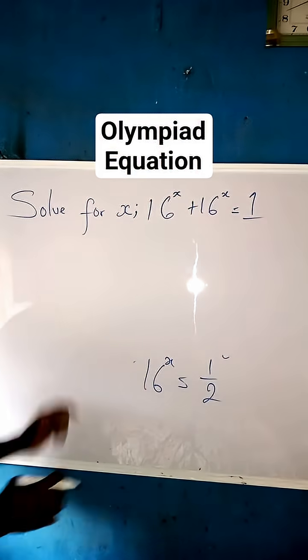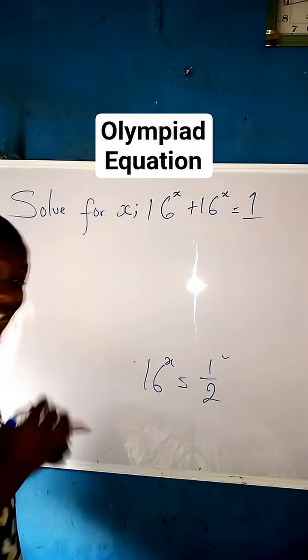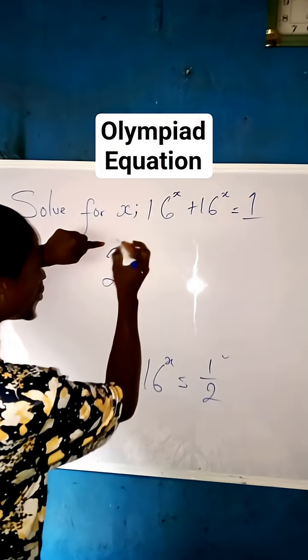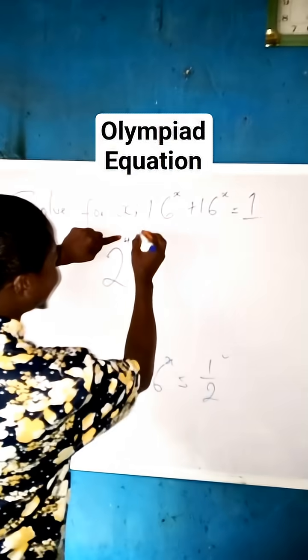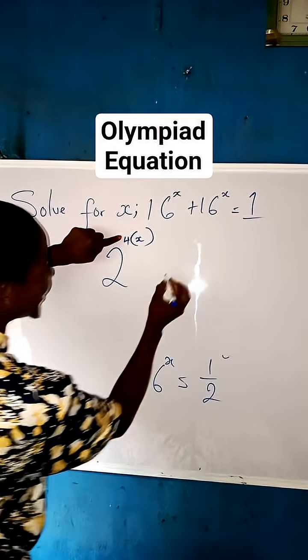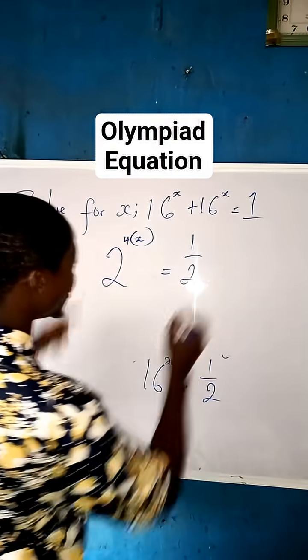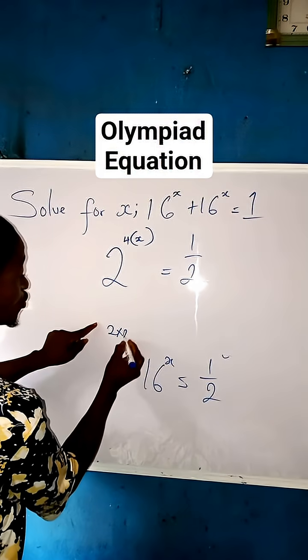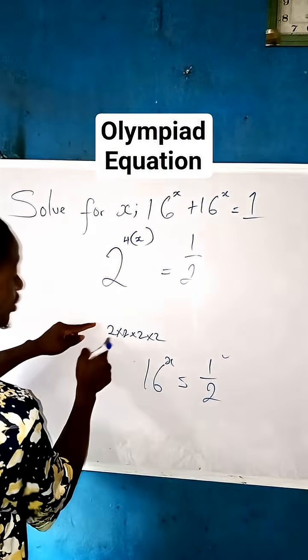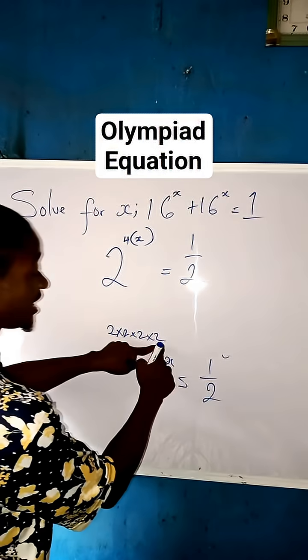Now we can let this 16 in the way that we have a base of 2 in different power. Yes, so we're going to have 2 to the power of what? Of 4, then times what? Times x, then equal to 1/2. Hope you understand how we do it because 16 is also known as 2 × 2 × 2 × 2.